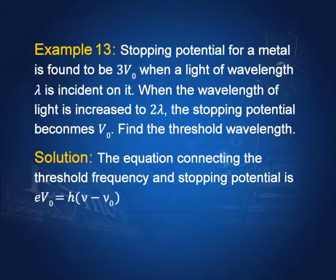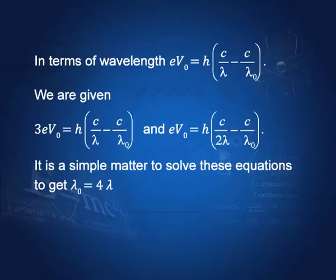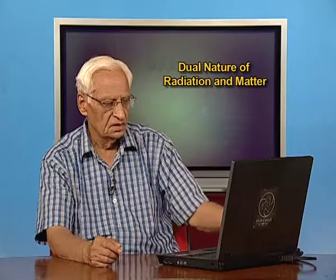Stopping potential for a metal is found to be 3V₀ when light of wavelength lambda is incident on it. When the wavelength is increased to 2 lambda, the stopping potential becomes V₀. We use the relation: eV₀ = hc/lambda minus hc/lambda₀. We are given 3eV₀ = hc/lambda minus hc/lambda₀, and eV₀ = hc/(2 lambda) minus hc/lambda₀. Solving this simultaneous equation, the threshold wavelength lambda₀ is found to be 4 lambda.